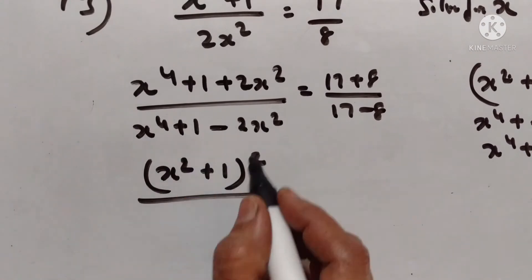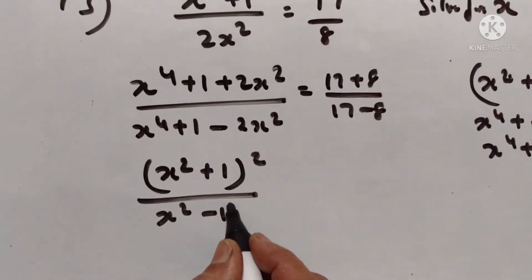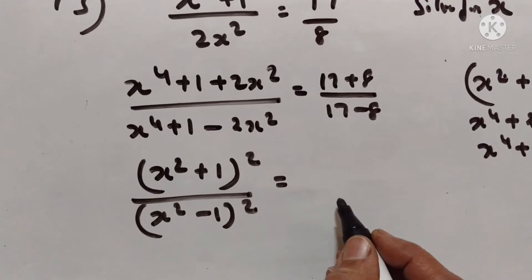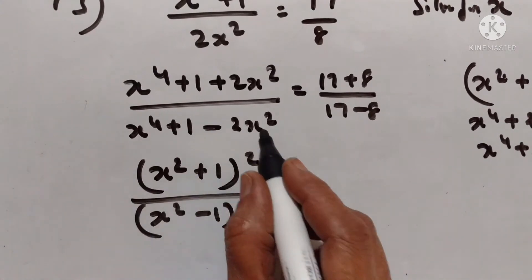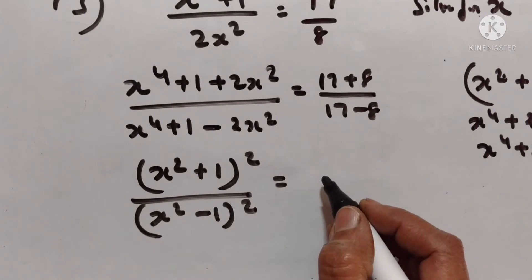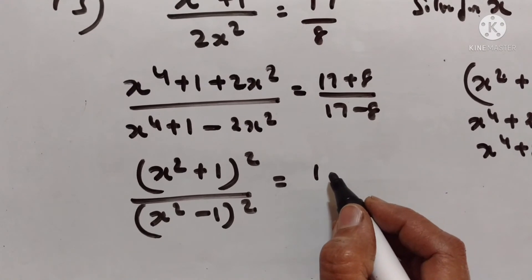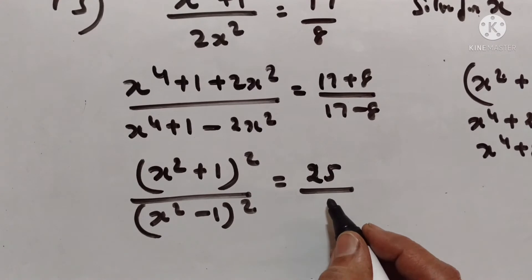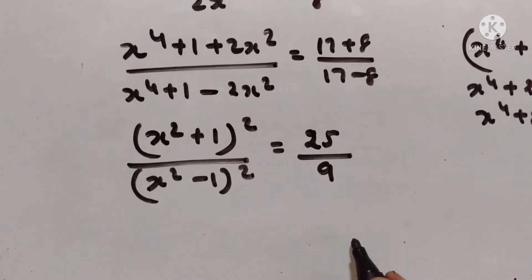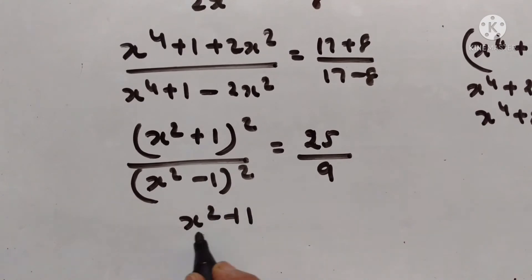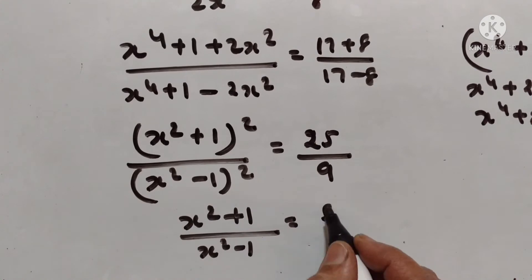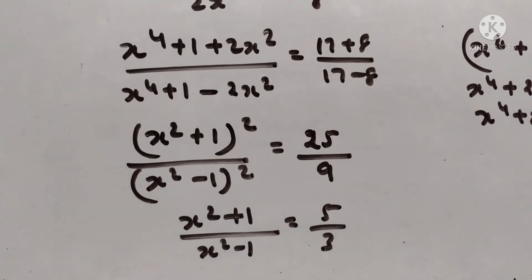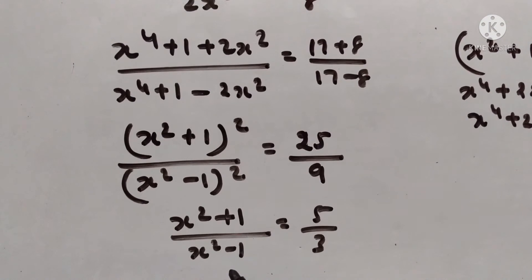The denominator is x squared minus 1, the whole square. When you expand this you will get that. So 17 plus 8 is equal to 25, and 17 minus 8 is equal to 9. Taking the square root on both sides we get x squared plus 1 upon x squared minus 1 is equal to 5 upon 3.